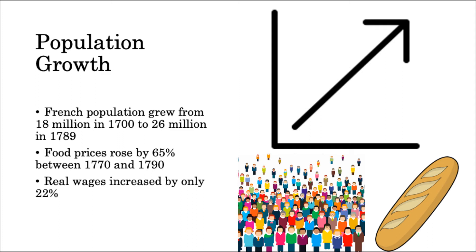As a result, food prices rose by 65% between 1770 and 1790, yet real wages increased by only 22%. Food shortages were particularly damaging for the regime, since many people blamed price increases on government failure to prevent profiteering — people taking advantage in order to gain unfair profit. By the spring of 1789, a poor harvest followed by a severe winter created a rural peasantry with nothing to sell and an urban proletariat whose purchasing power had vanished.